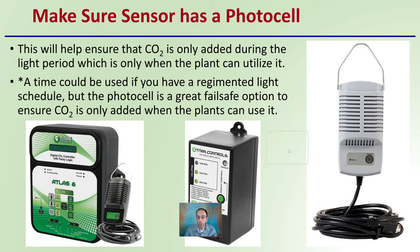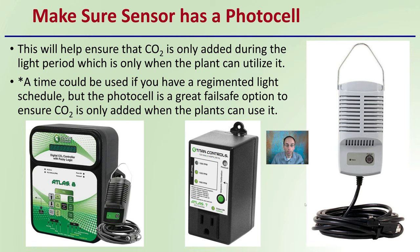Make sure your sensor has a photo cell. This will help ensure that carbon dioxide is only added during the light period, which is the only time plants can actually utilize it. A timer could be used if you have a regimented light schedule, but a photo cell is generally a fail-safe option. Most manufacturers are now moving to photo cells. If you're in indoor growing, the carbon dioxide system will automatically adjust to your light duration. If you're growing in an outdoor location or a cold frame, the photo cell can also adjust to the lengthening or decreasing duration of sunlight based on seasonal changes.